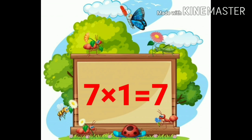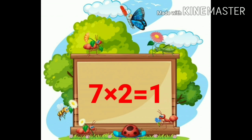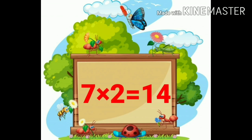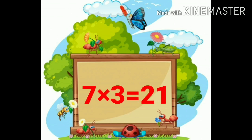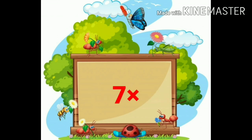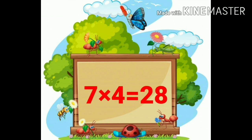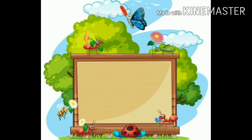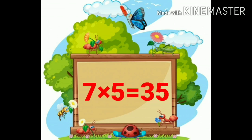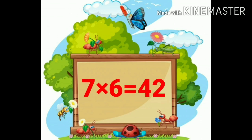Seven ones are 7. Seven twos are 14. Seven threes are 21. Seven fours are 28. Seven fives are 35. Seven sixes are 42.